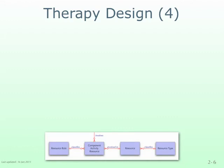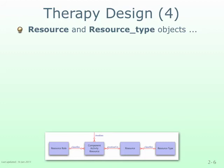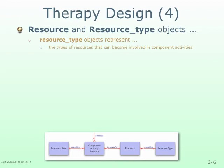The last group of data object classes represent information about the involvement of resource objects of various types in the performance of specific functional components of therapy programs. Firstly, there are resource and resource type data objects, where resource type data objects represent the types of resources that can become involved in the functional components of a therapy program, such as types of therapy equipment or materials or types of information such as printed or electronic documents, web pages.